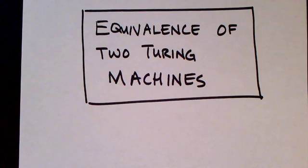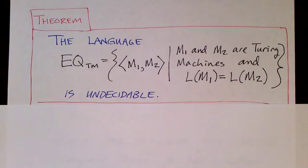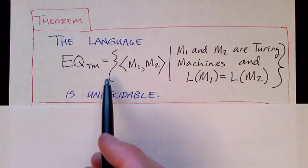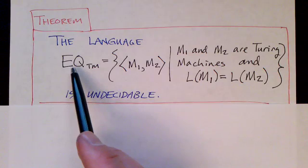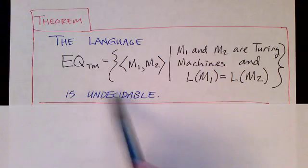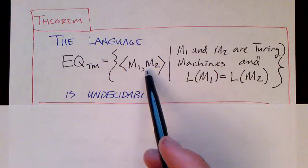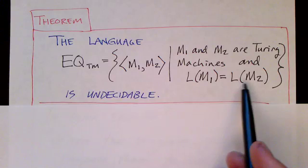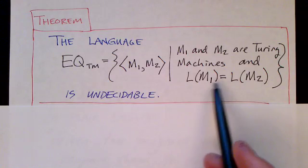Are two Turing machines equivalent? In other words, do they accept the same language? It turns out this question is undecidable, and in this video we'll both give a proof that this problem is undecidable and talk about the implications. We express problems in the form of languages, and so the language here is the equivalence of Turing machines. Given descriptions of two Turing machines, is the language described by M1 the same as the language described by M2? This language is undecidable.